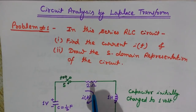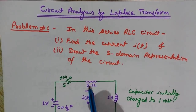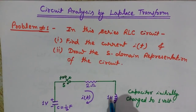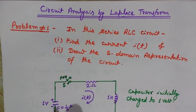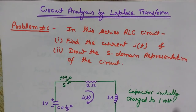So here we have three components: a resistance of 2 ohms, a 1 Henry inductor, and a capacitor of half Farad having 1 volt initial charge.